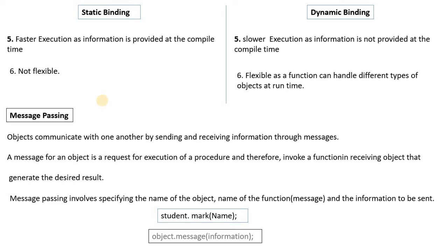Static binding gives faster execution because all the information is provided at compile time — everything is already bound before the program runs, so it executes faster. Dynamic binding has slower execution because the information is not decided until run time, so the program must decide which function to call while it is running.